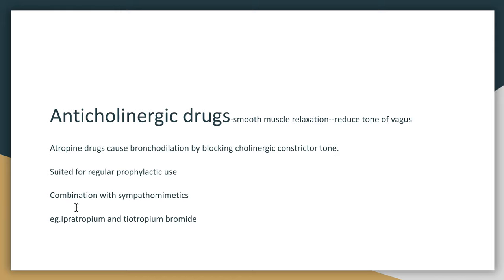Ipratropium and tiotropium bromide have actions largely confined to the respiratory tract. They do not dry up secretions unlike atropine, and they do not inhibit mucociliary motility. Drugs such as ipratropium and tiotropium, with a duration of action of about 24 hours, can be used for smooth muscle relaxation prophylactically in patients of asthma.